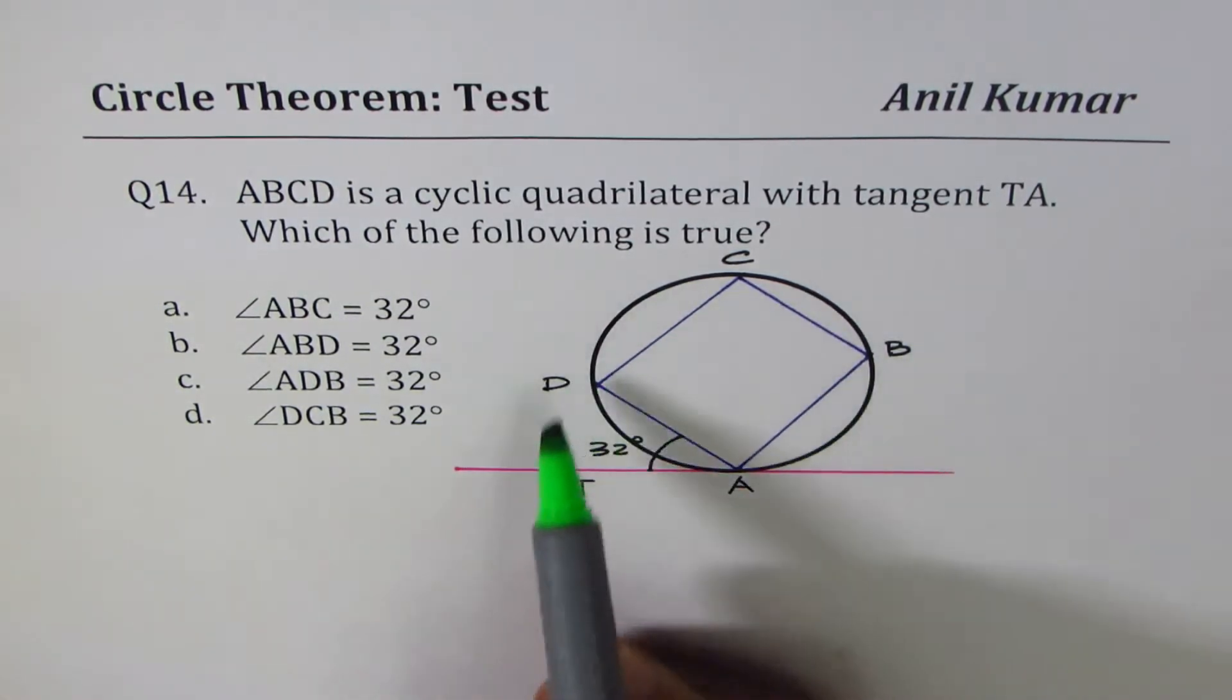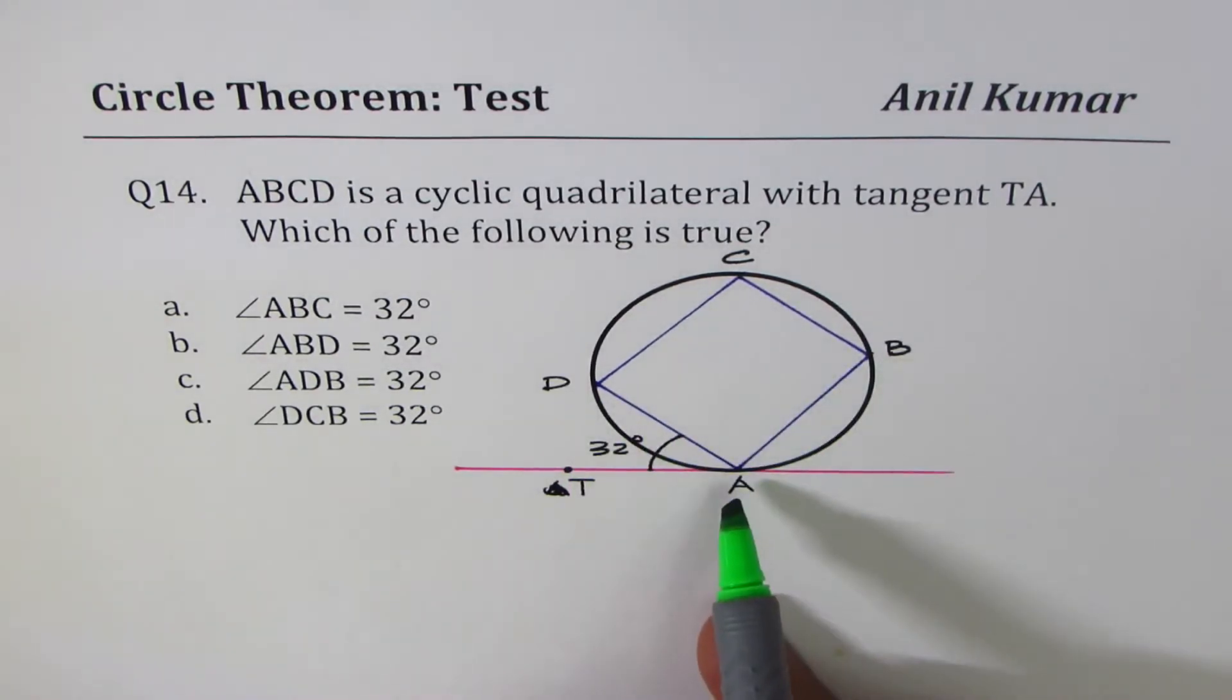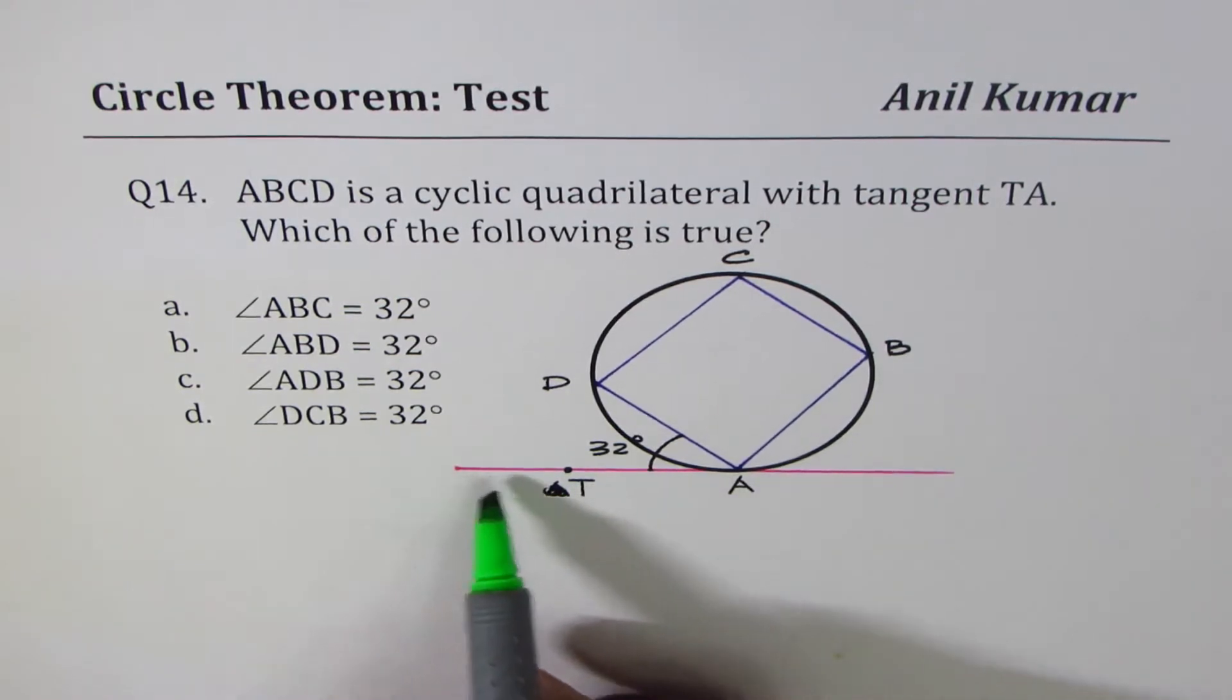If you look at this diagram, we have a circle with four vertices on the circumference that makes it a cyclic quadrilateral. TA is the tangent. We have given you the angle 32 degrees.